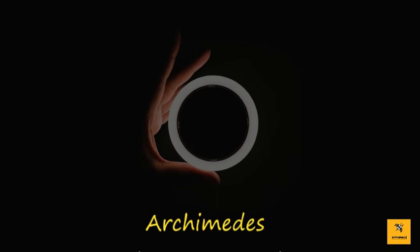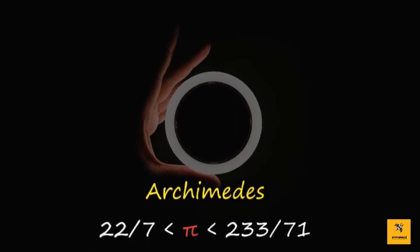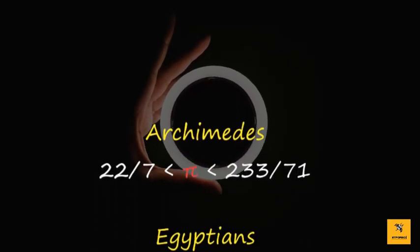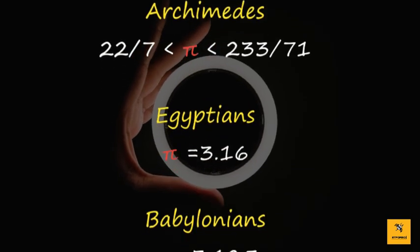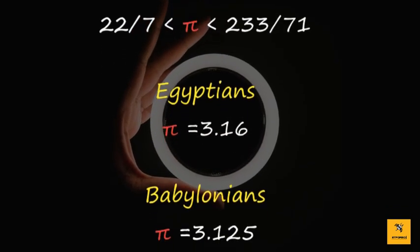In the early days Archimedes said that this number was between 22 divided by 7 and 233 divided by 71, while the Egyptians calculated it to be approximately 3.16 and the Babylonians to be 3.125.